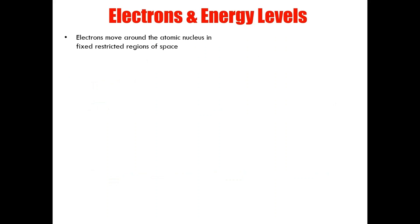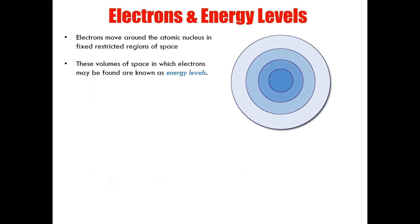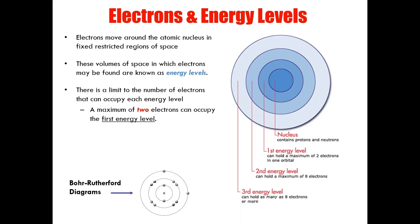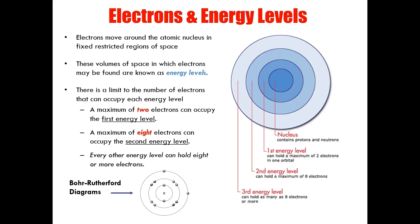Electrons move around the atomic nucleus in fixed restricted regions of space. These volumes of space in which electrons may be found are known as energy levels. There is a limit to the number of electrons that can occupy each energy level. A maximum of two electrons can occupy the first energy level. A maximum of eight electrons can occupy the second energy level. And every other energy level can hold eight or more electrons.